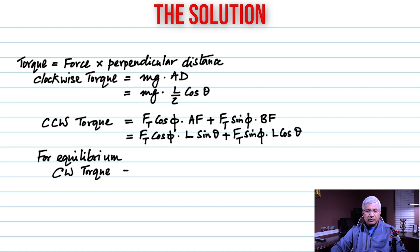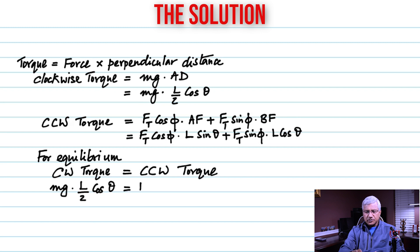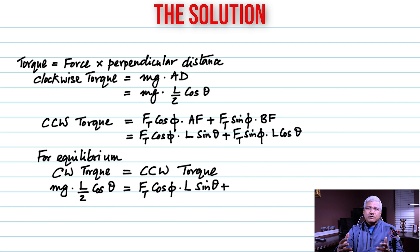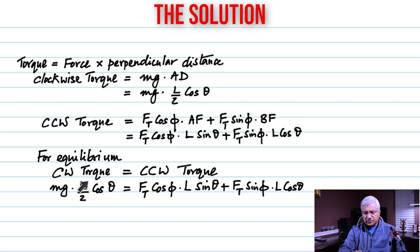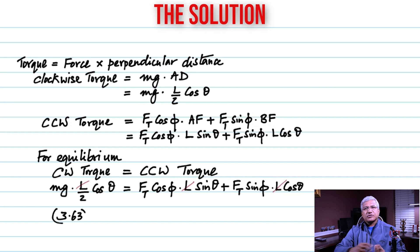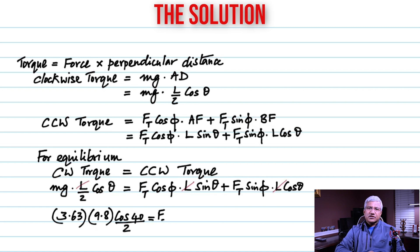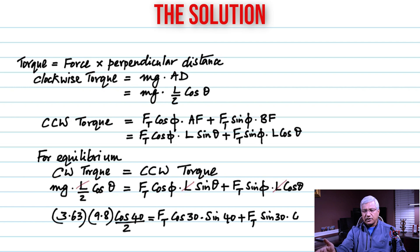For equilibrium, the clockwise torque equals the counterclockwise torque. So mg × (L/2) cosine theta = FT cosine phi × L sine theta + FT sine phi × L cosine theta. Notice there is L on both sides — we don't even need the length because we can cancel it out. With mass = 3.63 kg and g = 9.8, we get: 3.63 × 9.8 × cosine 40° / 2 = FT cosine 30° × sine 40° + FT sine 30° × cosine 40°.